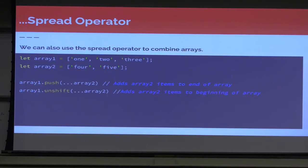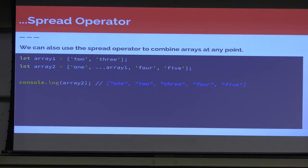The spread operator is very useful in a number of ways. You can use it to combine arrays — if you have two arrays with values 1, 2, 3 and 4, 5, you can push the spread of array2 to add all items from array2 onto array1. You can also unshift it to add those items to the beginning of the array. Or you can combine arrays at any point: if array1 is 2 and 3, and array2 is 1, then spreading gives you 1, 2, 3, 4, 5. It spreads out those values at any point you want, giving you full control over your arrays.